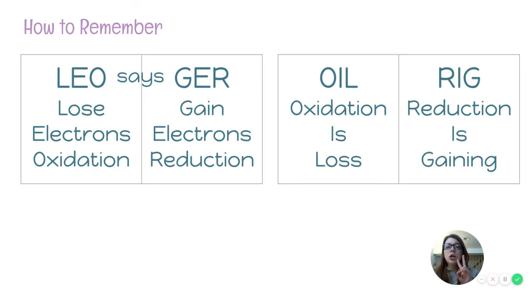Now there are two ways to kind of keep all of this straight in your head. This is the one that I prefer. Leo says ger. It makes me think of like a little lion. So when you lose electrons, that is called oxidation. That's Leo. Ger stands for gaining electrons is reduction. Over here, this is one that another group of people like, an oil rig is like used to drill oil out of the ground. This oil stands for oxidation is loss and rig stands for reduction is gaining. So those are a few ways to keep it all straight in your head.